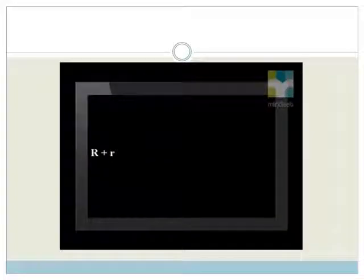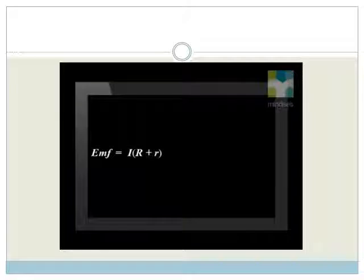First we need to remember that the internal resistance R of a cell is always in series with the rest of the network and it is added to the total external resistance R of the network in calculations.